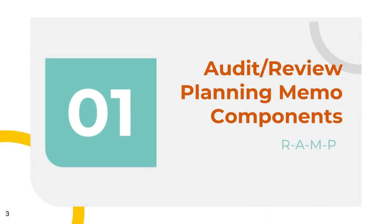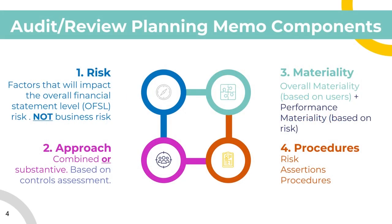So whether you're going to do an audit planning memo or a review planning memo, it's going to have the following four components. You're going to start with Risk, then Approach, then Materiality, then Procedures. We use the acronym RAMP to memorize it. I say audit and review because the four components are the same in both of them.